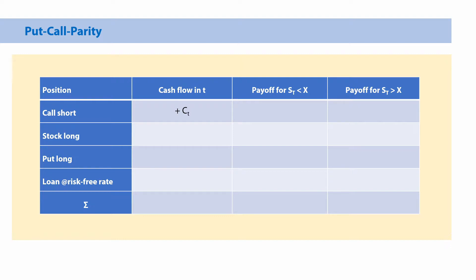Selling a call means a cash inflow for the trader in the amount of whatever the call costs at time T. If the stock price is below the exercise price, the call will not be exercised, so no worries. If, on the other hand, the stock price is above the exercise price, then the call will be exercised by the call owner. But the call seller will lose that amount — his payoff will be negative (S_T minus X). So it's actually a loss.